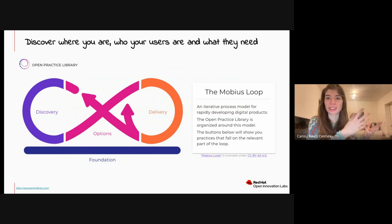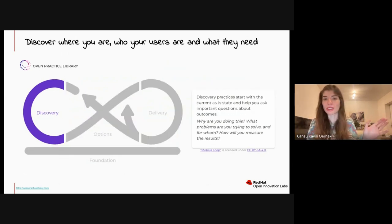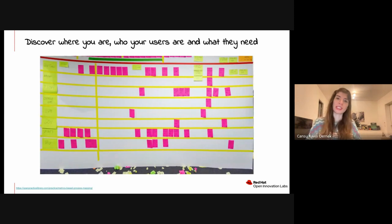We need to start at the discovery space to answer these questions and then take the answers, the results of this, and deliver something that works for our developers. We are on the discovery phase, and I want to share some good practices we use in the field. First one is called metric-based process mapping, which is my favorite. This is where we usually select a scenario like from idea to production, getting an idea into the hands of our end users, mapping out this process by identifying who are the people, the teams and actors involved in this process.